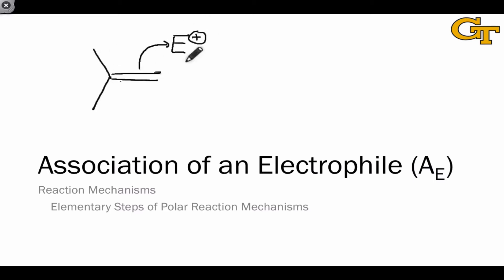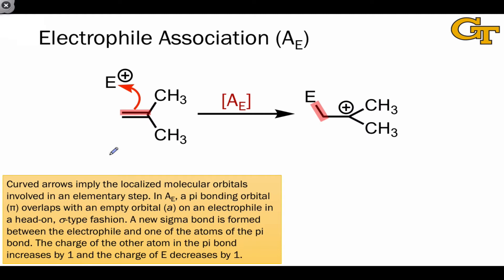What is the association of an electrophile? Association of an electrophile, or A sub E, involves a pi bond as nucleophile coordinating to an electrophile that's almost universally positively charged.